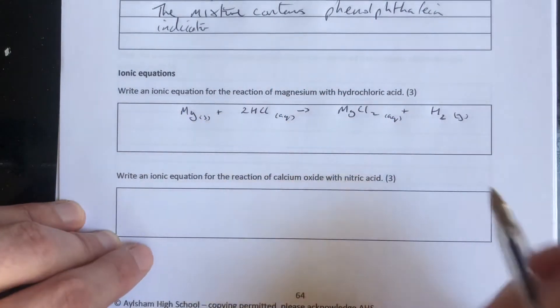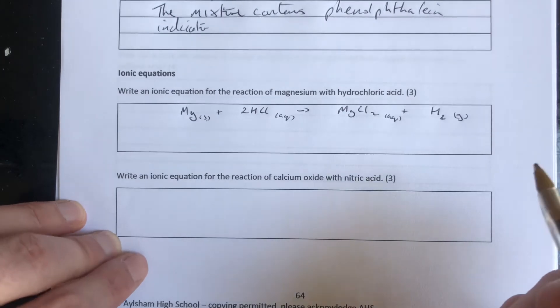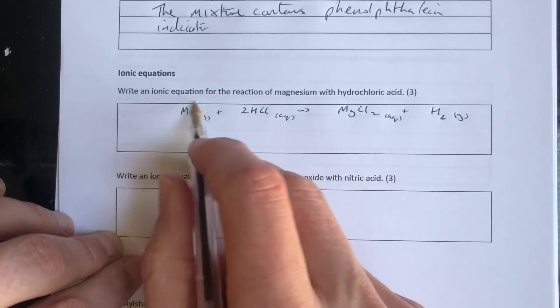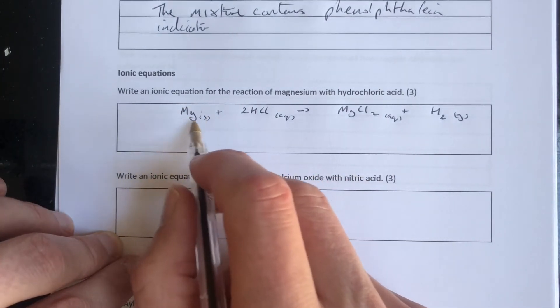It'd be useful before we go any further to put some charges in on the ions here. Now magnesium is an element here, so no charge. Elements don't have charge.